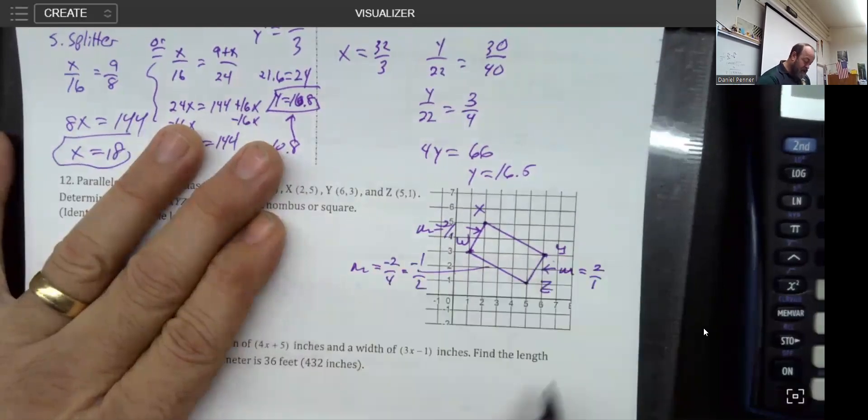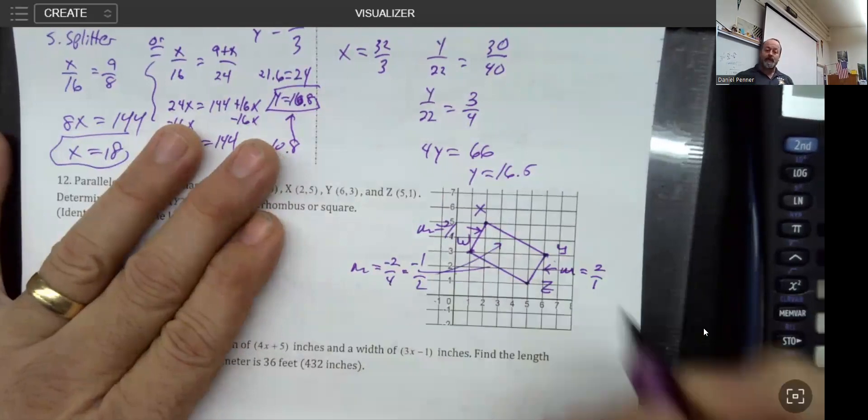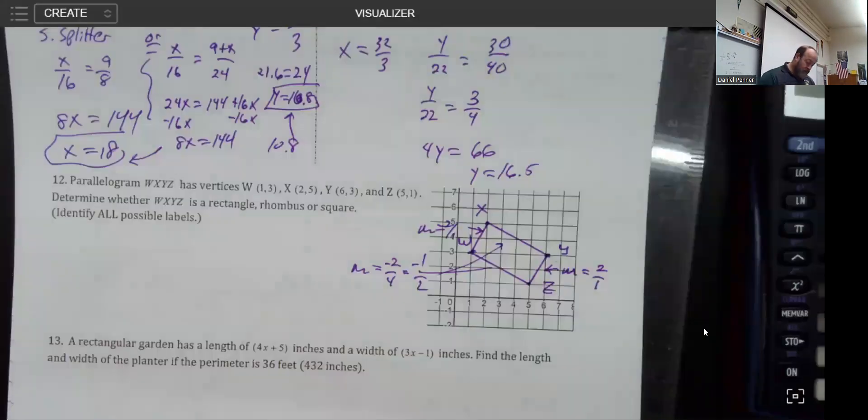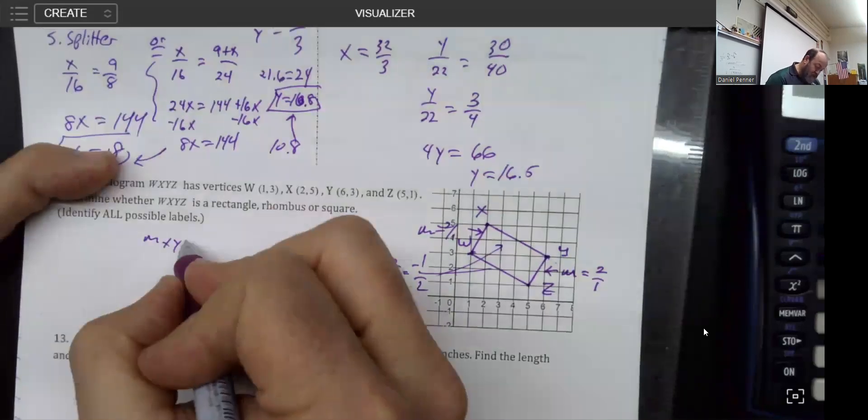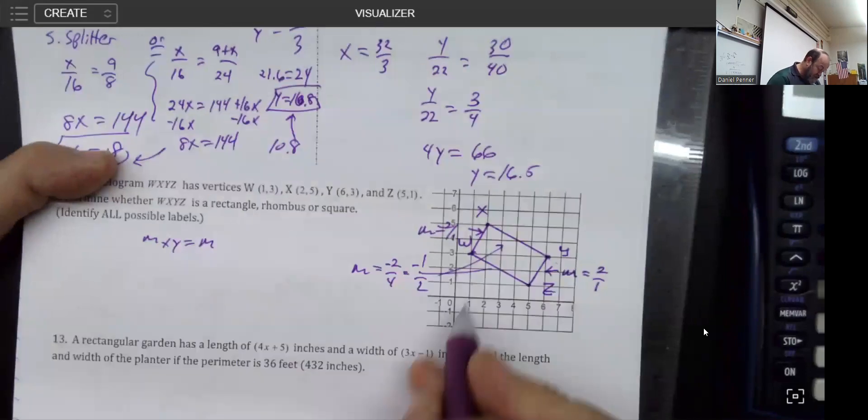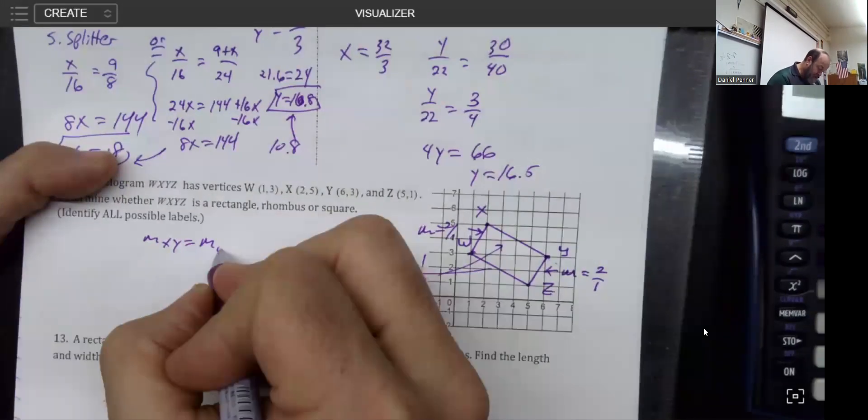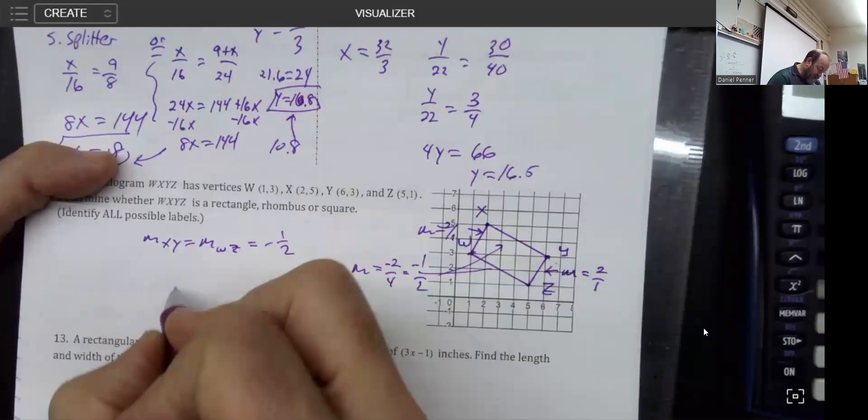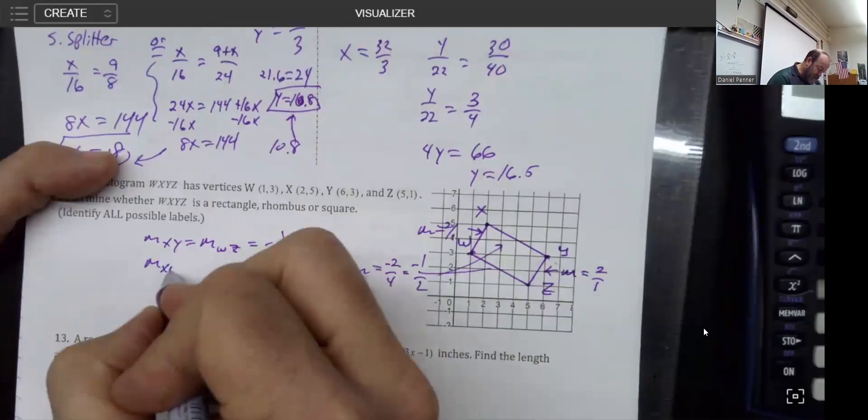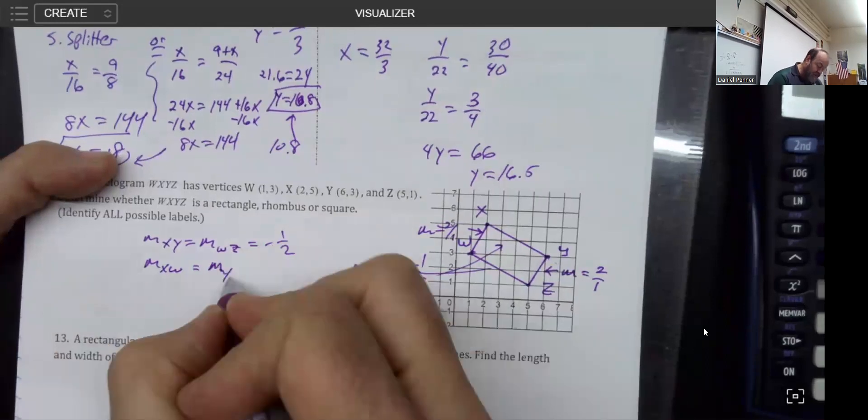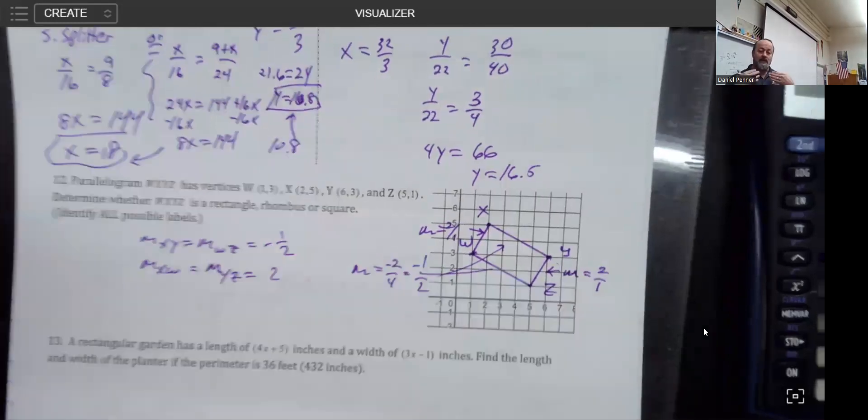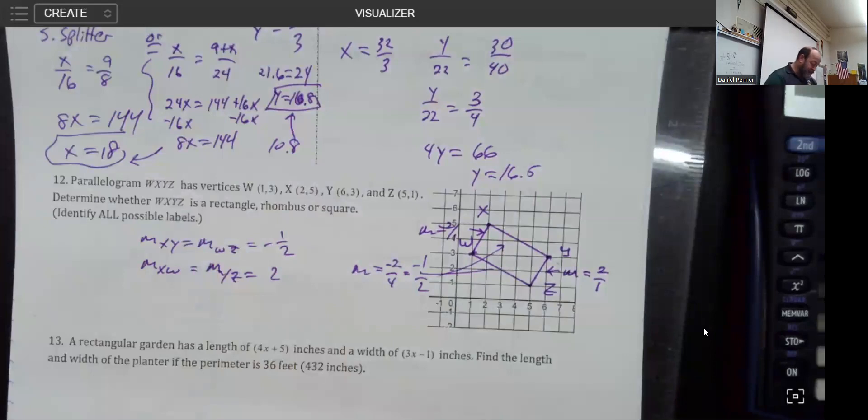You're going to notice that the same exact slope happens there. The two slopes that we get is that the slope of XY is the same as the slope of WZ, and both of those are -1/2. But the slope of XW is the same as the slope of YZ, and those are both 2. What you'll notice is that is definitely a rectangle.